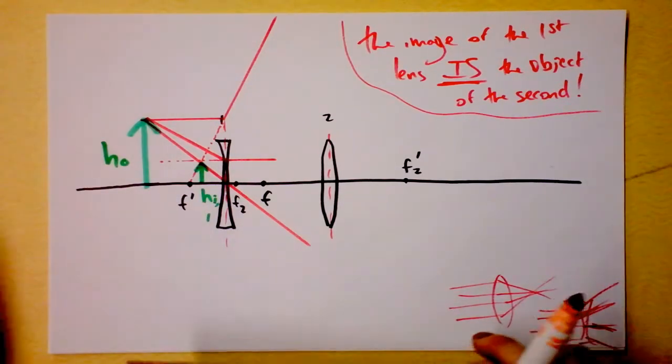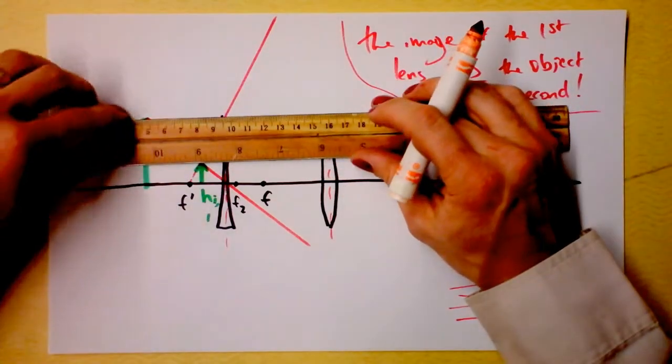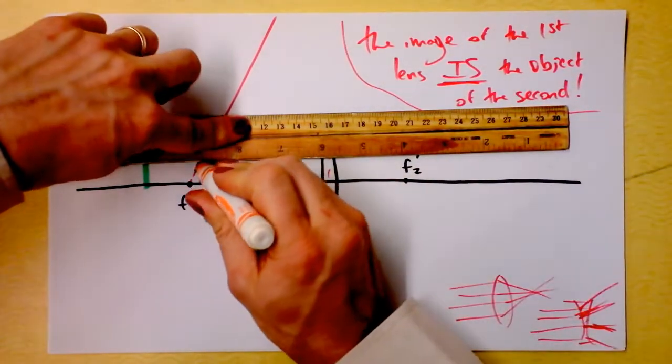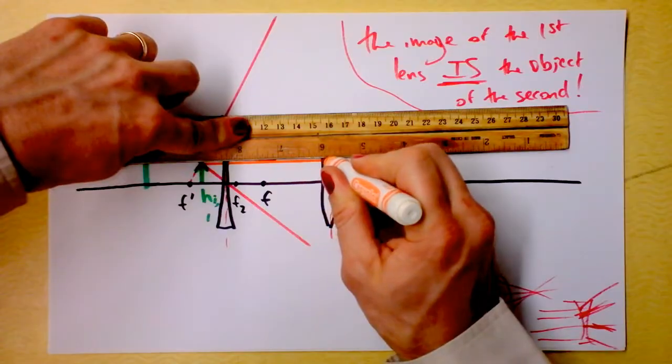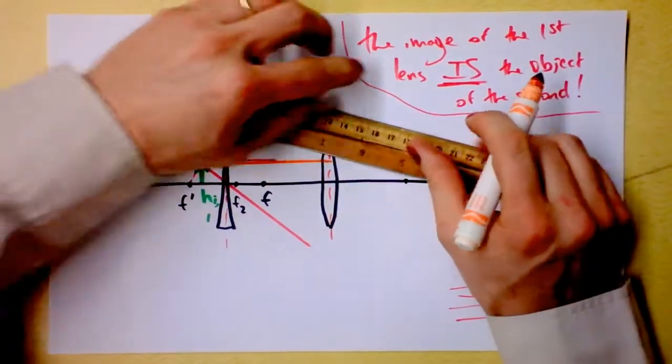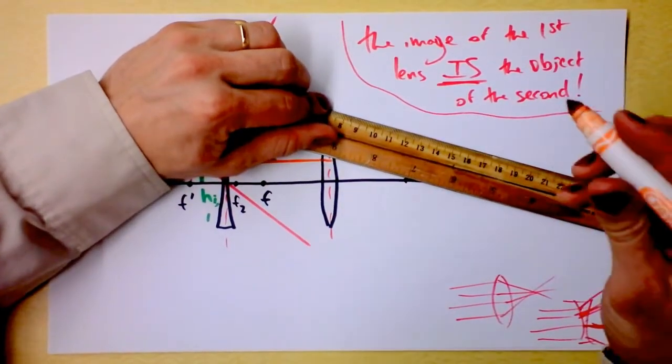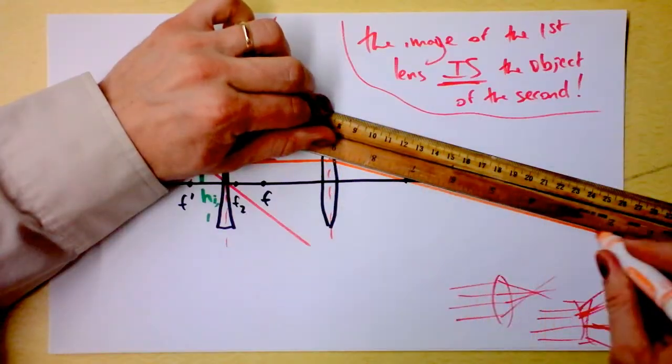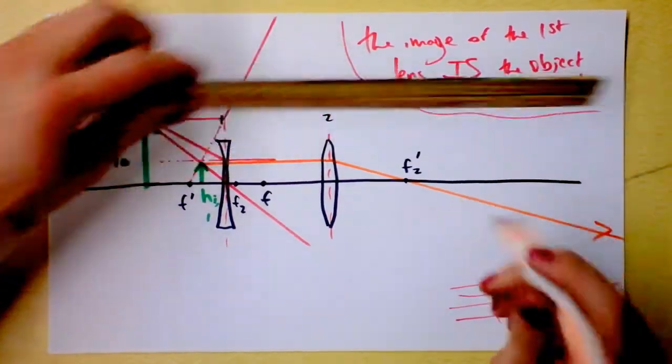First, we start with the P ray. And again, we're dealing with this lens over here and we're dealing with that image acting as the object. So it comes in here, parallel, and it's going to go out through the focus. There it is, going out through the focus. That's our P ray.